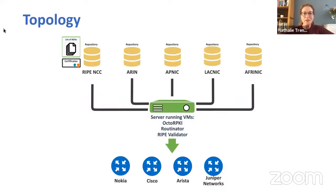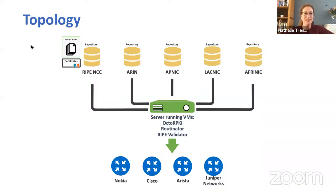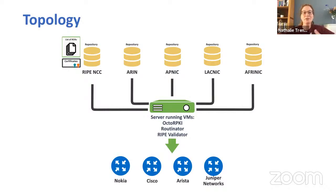Let's talk about the topology — very important. What we have is the setup of RPKI, really quickly. When you create a ROA, that ROA lands in a repository. A repository is a big database together with all the other ROAs and other RPKI objects. At the moment, there are a bunch of those repositories — with RIPE NCC, ARIN, APNIC, LACNIC, and AFRINIC. All the data in those repositories, all those ROAs, are collected by a validator tool.